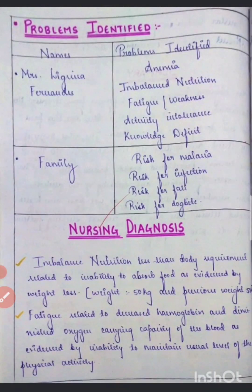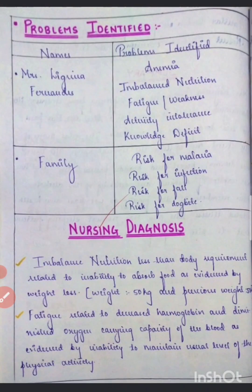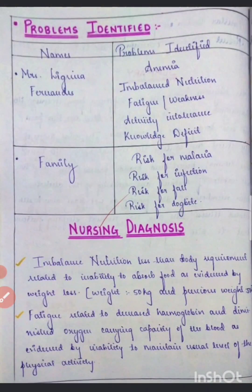Before writing the nursing diagnosis, you also have to mention the investigations. If writing for medical nursing, the investigations will be on their case papers. Then you'll have to write the nursing diagnosis based on the problems identified in the patient.